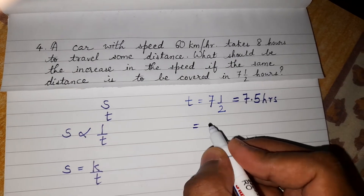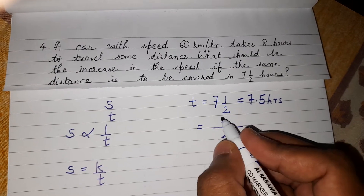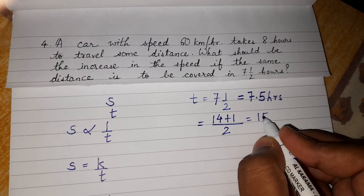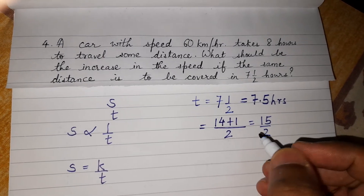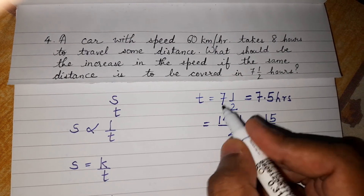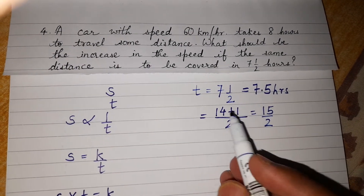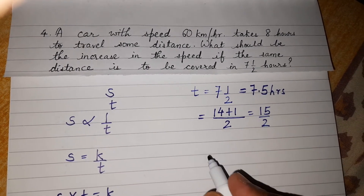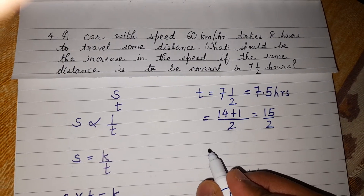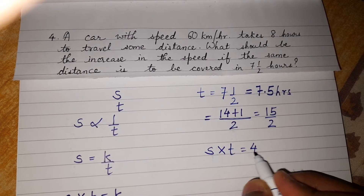This can also be written as a fraction: 15 by 2. If you are comfortable with decimals you can use 7.5, otherwise convert it to the fraction 15 by 2. So now t is 15 by 2, and the equation of proportion is s into t is equal to 480.